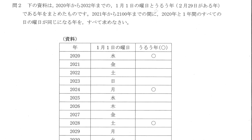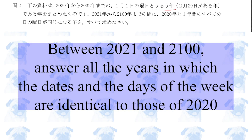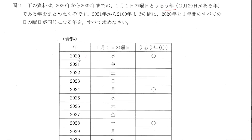問2: 2021年から2100年までの間に2020年と全ての日の曜日が同じになる年をすべて求めなさい。The keyword is ウルウ年 (leap year). In 2020, January 1st is a Wednesday, and 2020 is also a leap year. I'm going to assign each day of the week a number and try to figure out a pattern — assigning 1 to Sunday, 2 to Monday, and so on up to 7.